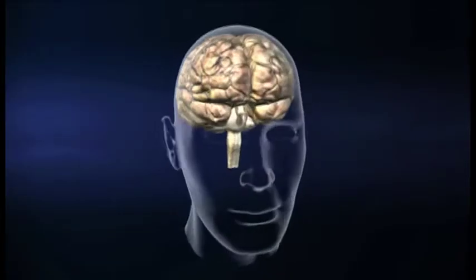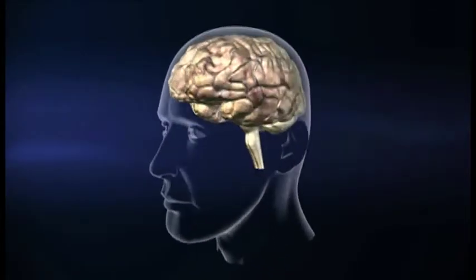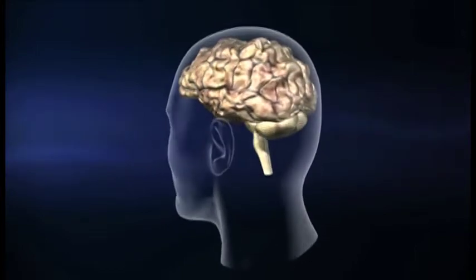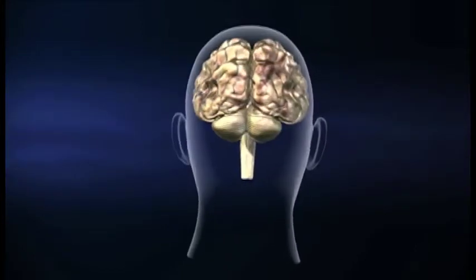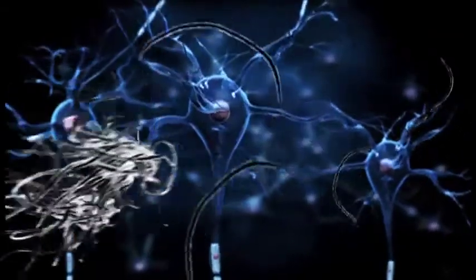This shrinkage results from the widespread death of brain cells known as neurons, which it is believed have been destroyed by two pathological proteins, beta-amyloid and tau.